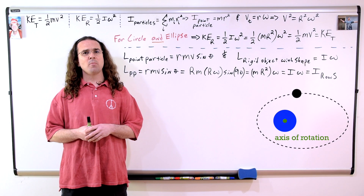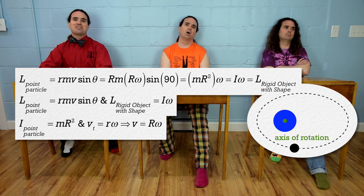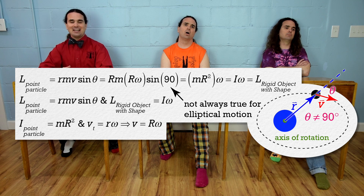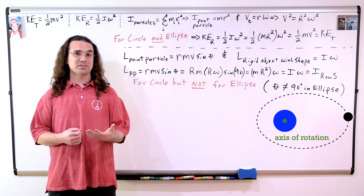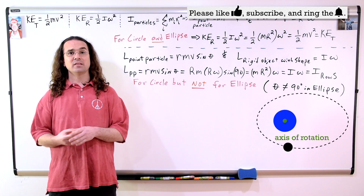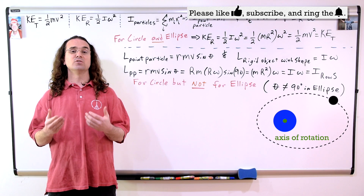Billy, what about the angular momentum equations? How are they affected by the point particle moving through an ellipse rather than a circle? Well, r is still the same. But angular momentum is a vector — the direction matters. The angle theta in the angular momentum of a point particle equation will no longer always be 90 degrees if it's moving through an ellipse and not a circle. And that means the equations for angular momentum will no longer be equivalent for an object moving through an ellipse. That is correct. Kinetic energy is a scalar; however, angular momentum is a vector. Therefore, the direction matters for angular momentum. When moving in an ellipse, the angle between the r vector and the linear velocity of the point particle is no longer always 90 degrees, so the two angular momentum equations are no longer equivalent.